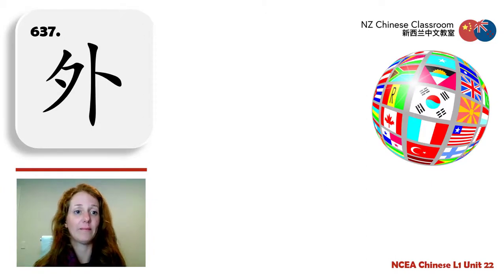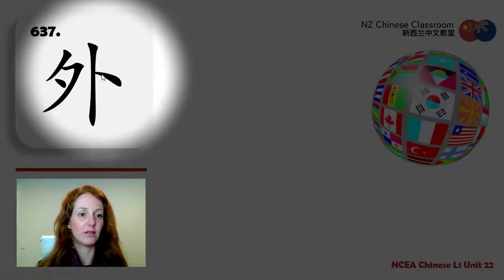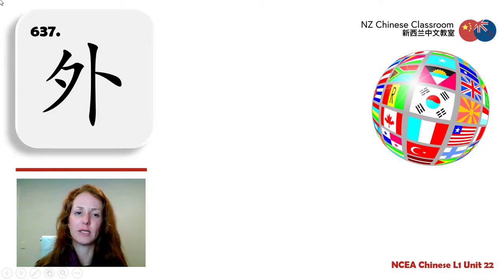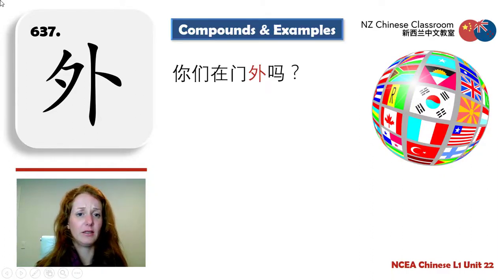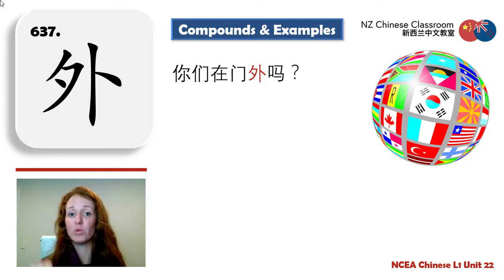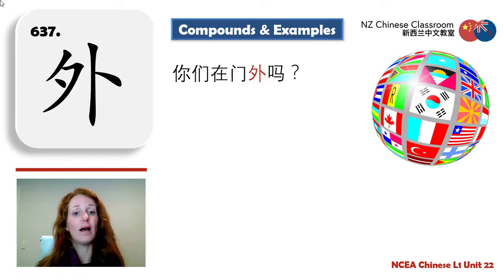外 — outside. This character helps to think of the outer part as outside. Example: 你们在门外吗? — Are you guys outside the door? 外 can be a preposition meaning outside somewhere, like 门外 — outside the door. Similar to 桌子上 or 里, 外 gives location.